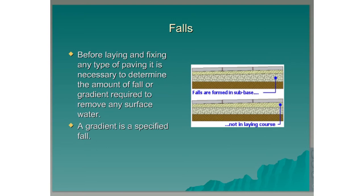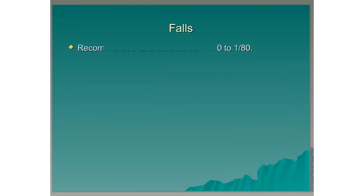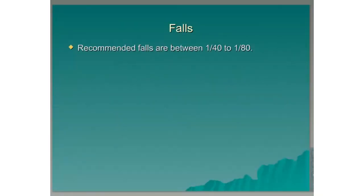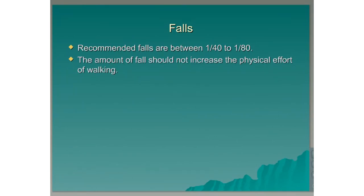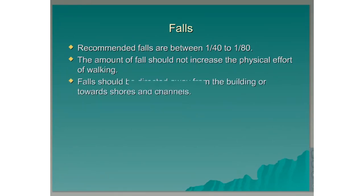A gradient is a specified fall. Recommended falls are between 1 in 40 to 1 in 80. The amount of fall should not increase the physical effort of walking, and falls should be directed away from the building or towards shores and channels. Remember, the smaller the fall number, the steeper the gradient. So a fall of 1 in 40 is much steeper than a fall of 1 in 80.